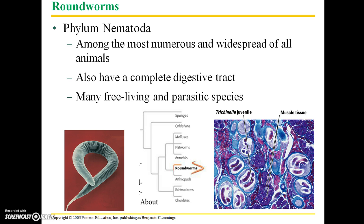The roundworms are classified within phylum Nematoda, commonly referred to as nematodes, and they are among the most numerous and widespread of all animals. Nematodes have complete digestive tracts and there are many free-living as well as parasitic species.